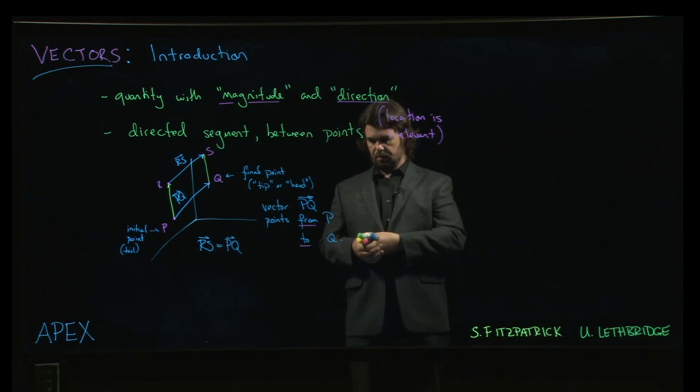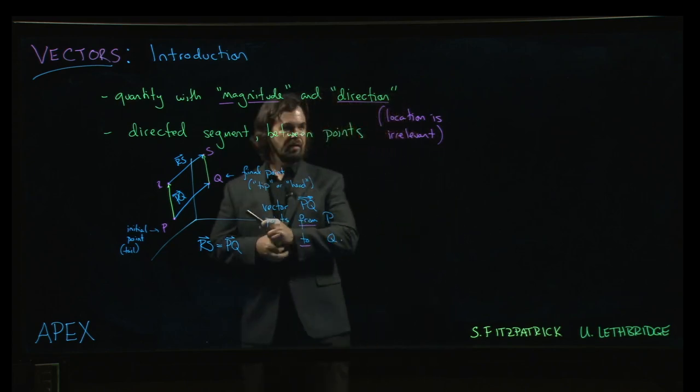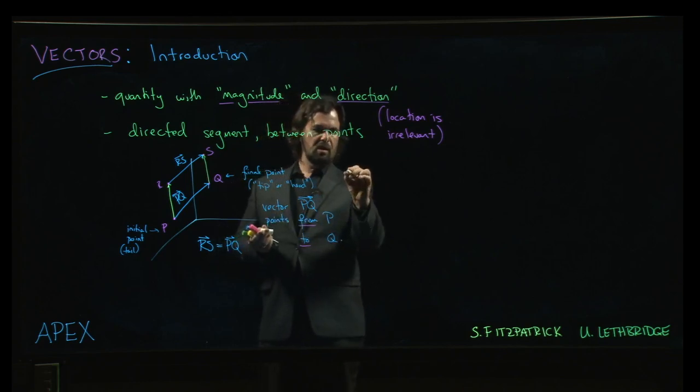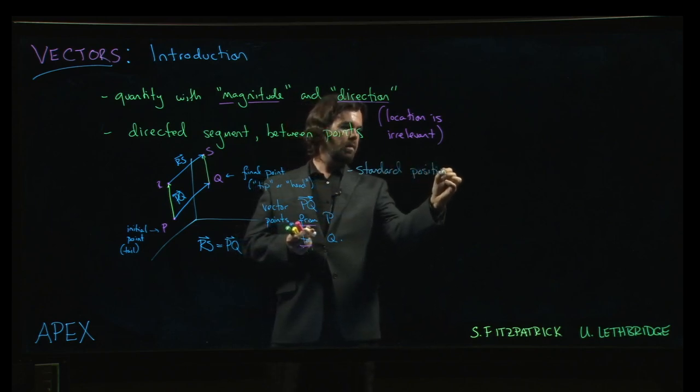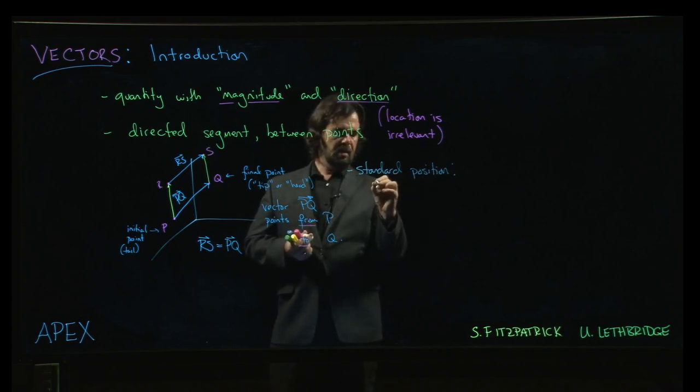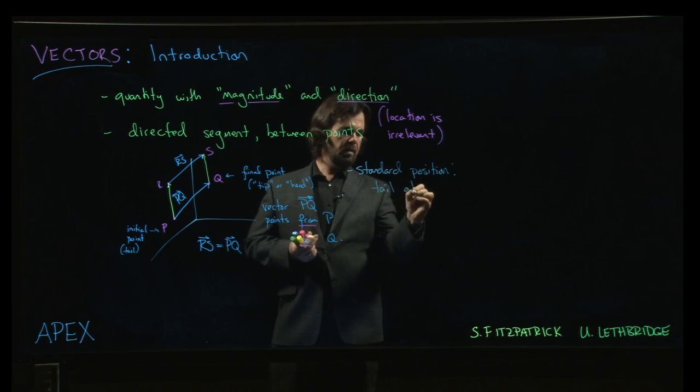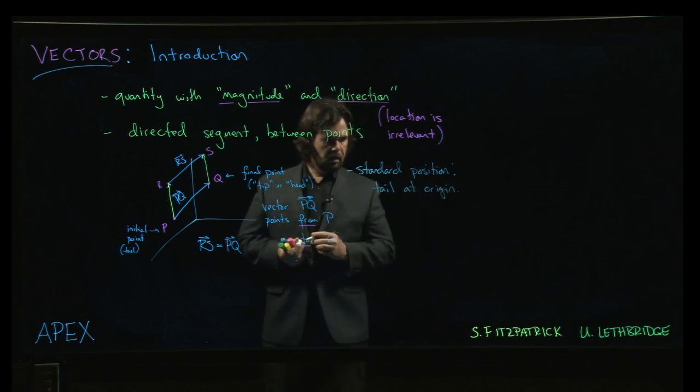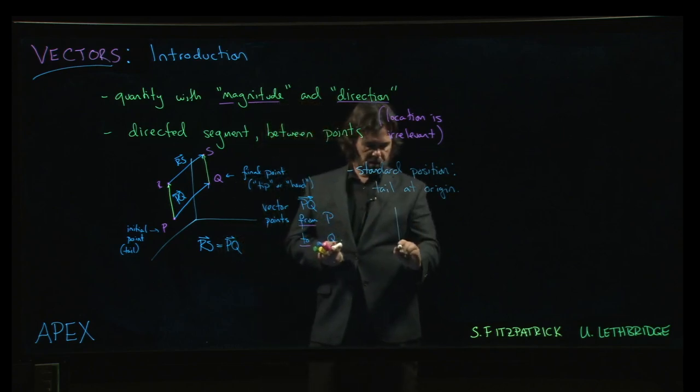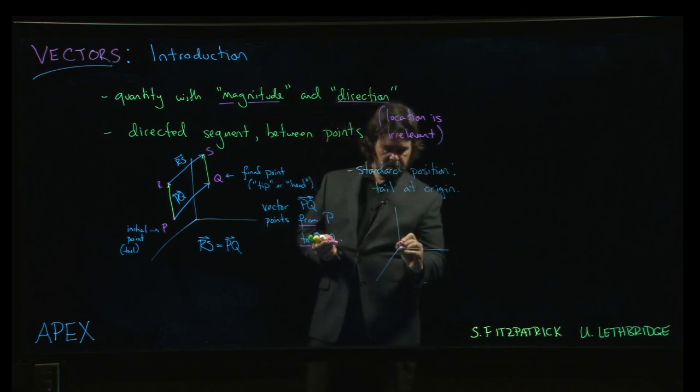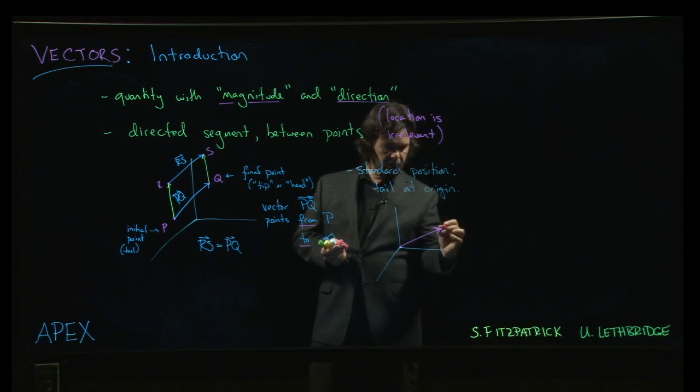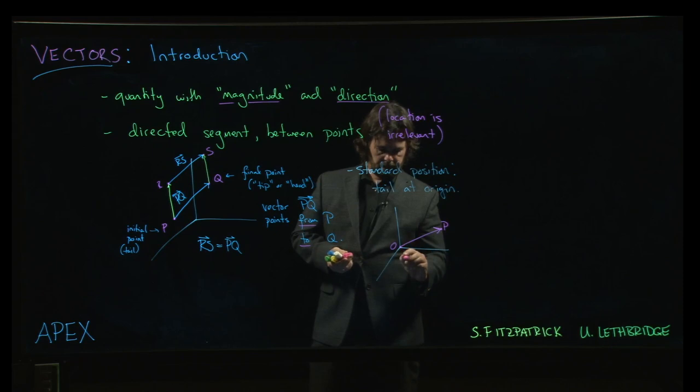Now in particular, since we only care about magnitude and direction and we don't care about location, you can introduce an idea of a standard position. And the standard position is the one where you have the tail, the initial point at the origin. And this tends to be kind of convenient because if you draw your vector with the tail at the origin as a reference point, going to some point let's say P, call it origin O, then we have this vector OP.